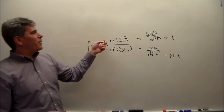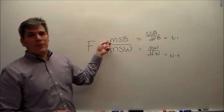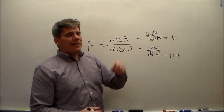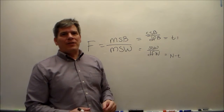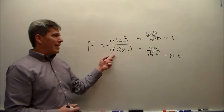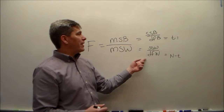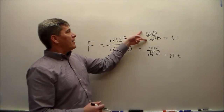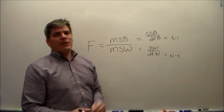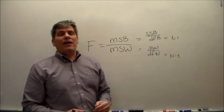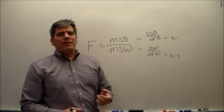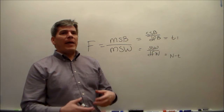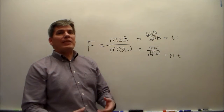This mean squared between has a chi-squared distribution if and only if this ratio has a chi-squared distribution. This mean squared within has a chi-squared distribution if and only if this has a chi-squared distribution. And these two things have chi-squared distributions if and only if the observations are normally distributed. It all goes back to the normal distribution.